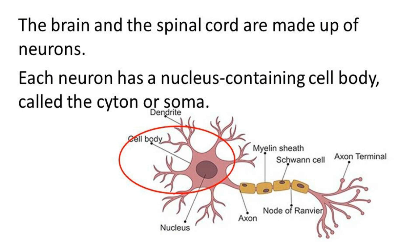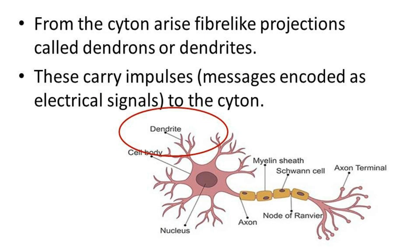From the cytone, fiber-like projections arise called dendrons or dendrites. These are branch-like, fiber-like structures — not like a room normally. These fiber-like projections are called dendrons or dendrites.